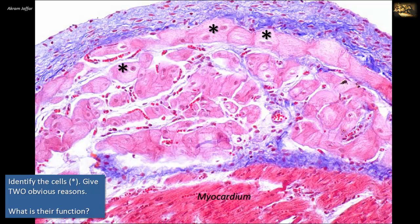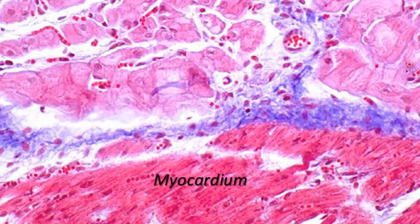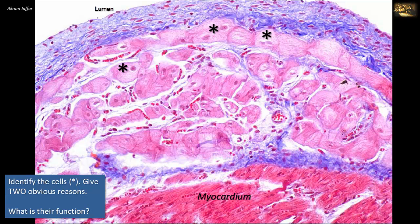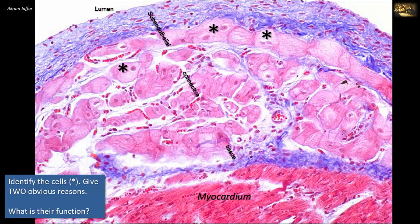Identify the cells indicated by the asterisk, give two obvious reasons for your identification, and state their function. Given this is a section in the wall of the heart, as indicated by the label myocardium, the lumen is lined by simple squamous epithelium — the endothelium. The cells indicated by the star are located in the subendothelial connective tissue between the myocardium and the endothelium. These cells may look like myocardial fibers because they are in fact modified or specialized cardiac muscle fibers — they are Purkinje fibers.